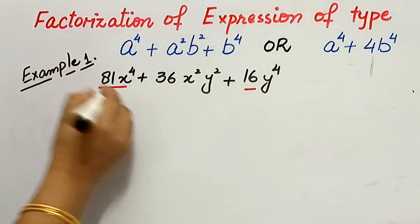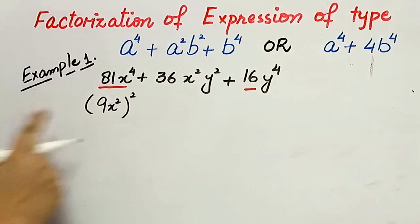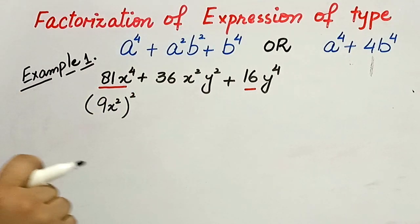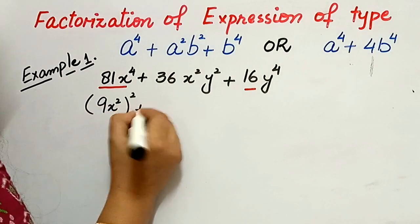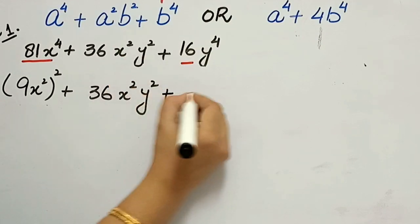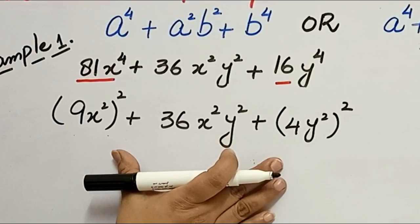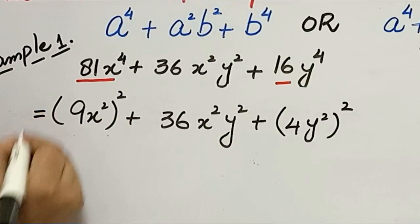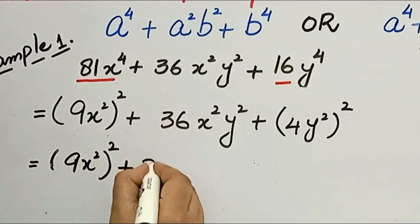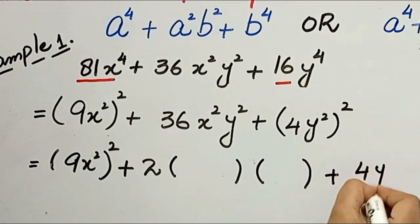This first term and this last term are whole squares. 81x⁴ is (9x²)², since 9 squared is 81 and x² squared is x⁴. Then we have + 36x²y² + (4y²)². To complete the square using the formula a² + 2ab + b², we write (9x²)² + 2 × (blank) + (4y²)².